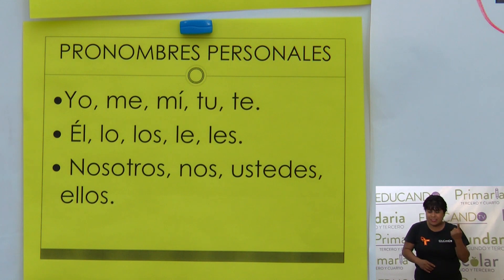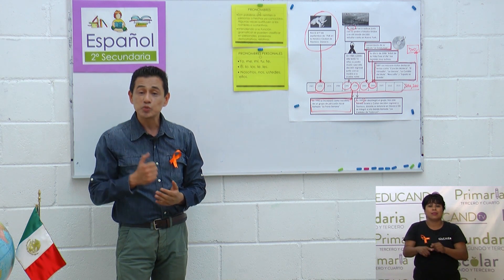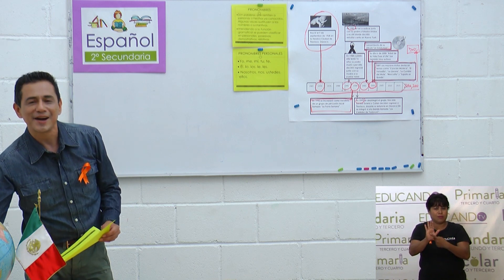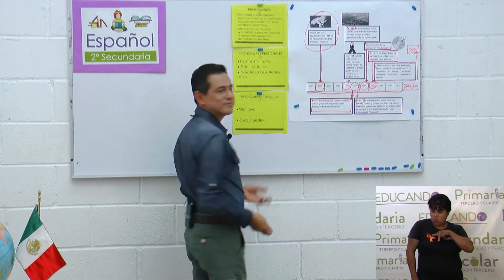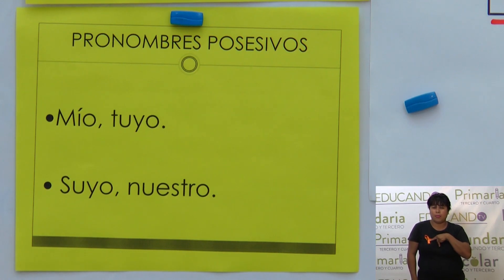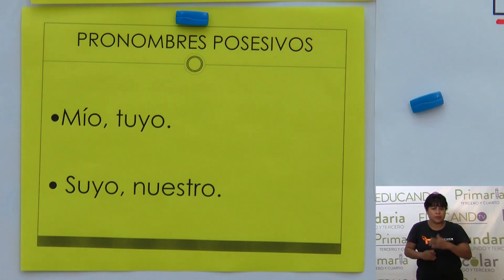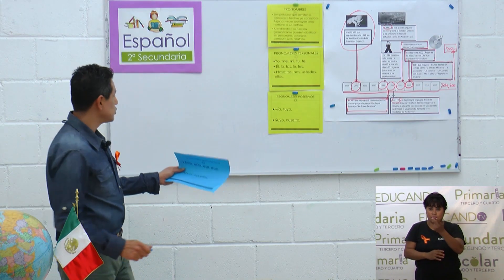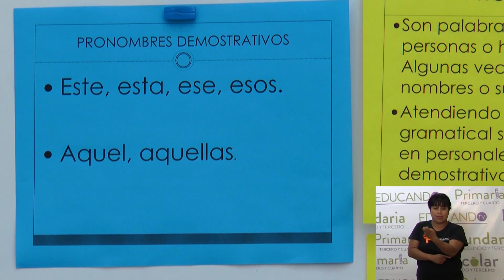Muy bien. Siguiendo la misma línea, vamos a continuar con los pronombres posesivos, que probablemente ya los han visto y al momento en que yo se los enseñe los van a reconocer. Los pronombres posesivos son: mío, tuyo, suyo y nuestro. Recuerden que estos recursos son para que al momento de escribir los utilicen. Ahora nos toca ver los pronombres demostrativos. Los pronombres demostrativos son: este, esta, ese, esos, aquel y aquellos. Una cosa importante: cuando son pronombres demostrativos, este, esta, ese, esos no llevan acento, tampoco aquel.